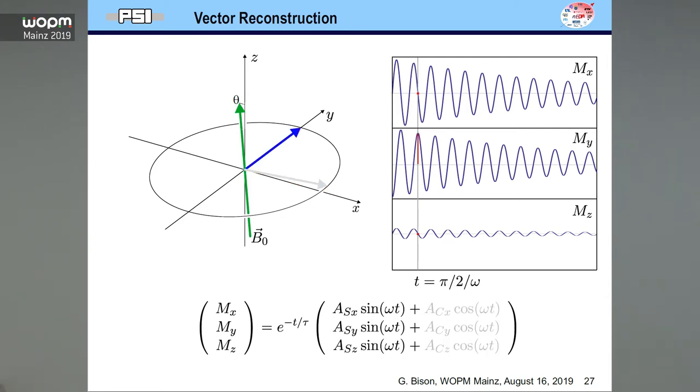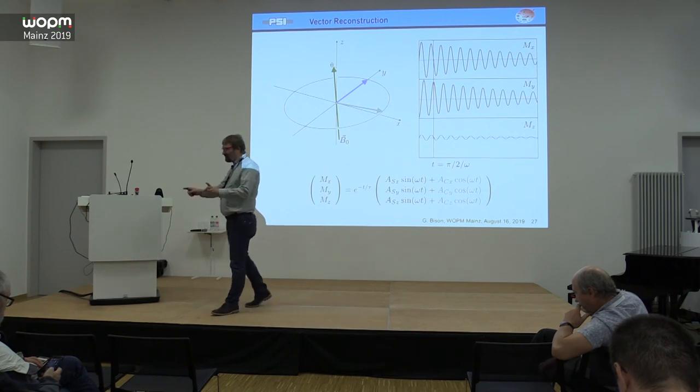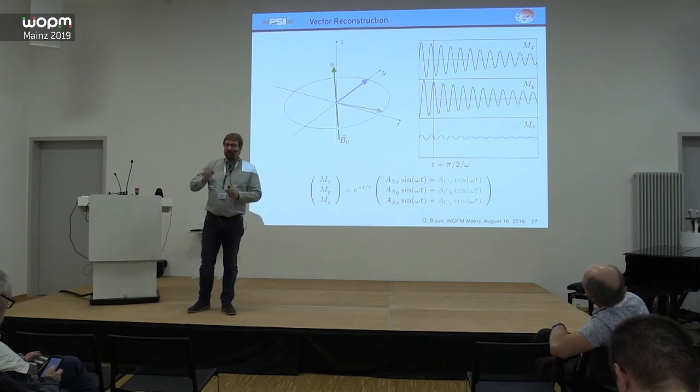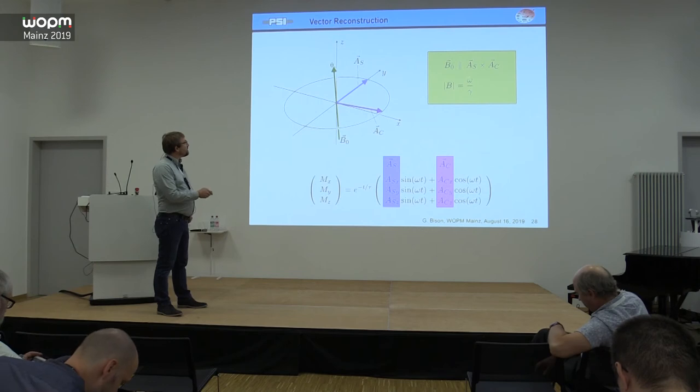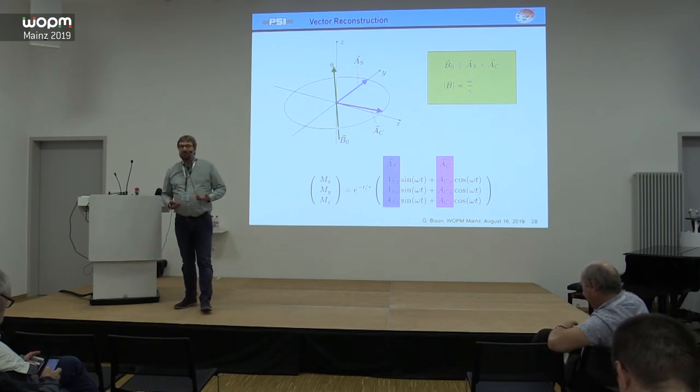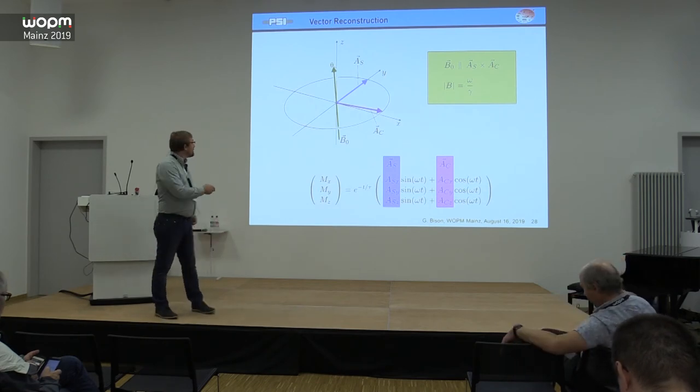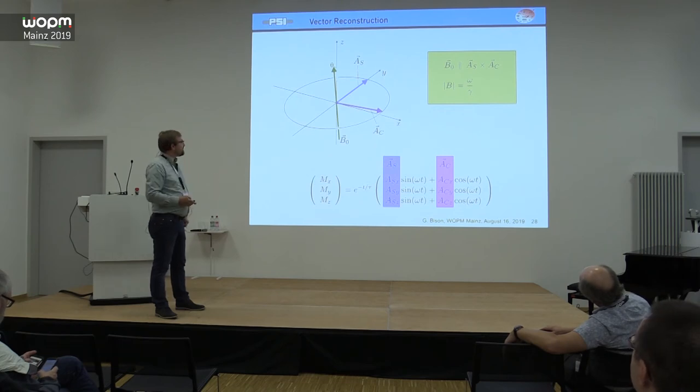Now, if we go to a time where like a quarter of a Larmor precession later, then all the cosines are zero and the sines are one. The vector that we see here must be put together with the sine amplitudes. And in this example, it's just a y component that has a non-zero amplitude. The trick now is these two vectors are guaranteed to precess in a plane that is perpendicular to the magnetic field. The two vectors are also perpendicular to each other. If we build the cross product of those, we gain something that is parallel to B zero. So, that's how we do it. It's also the statistically most efficient method if you can get two vectors that are at 90 degrees to gain that. And then, of course, the magnitude of the magnetic field is given by the frequency of the signal.